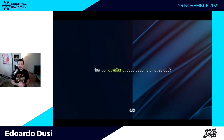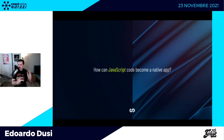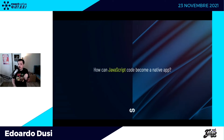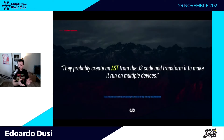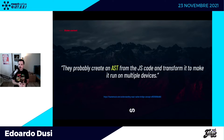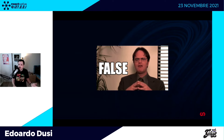Come fa React Native a prendere il JavaScript e trasformarlo in un'applicazione nativa? La prima risposta istintiva è che probabilmente compila il JavaScript in codice nativo a seconda del target device. Naturalmente oggi sappiamo che non è così.